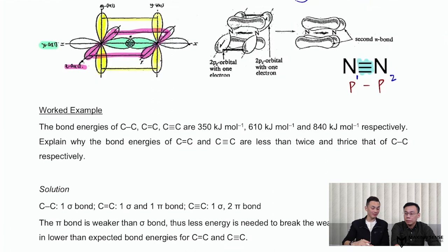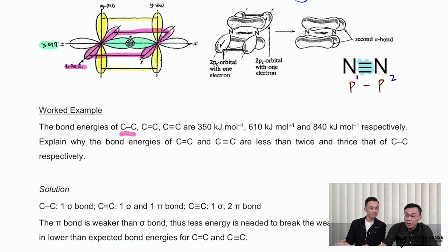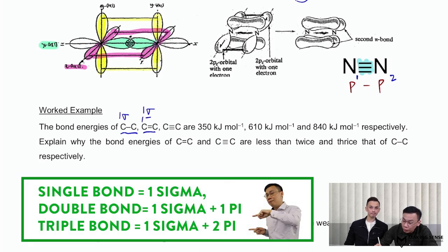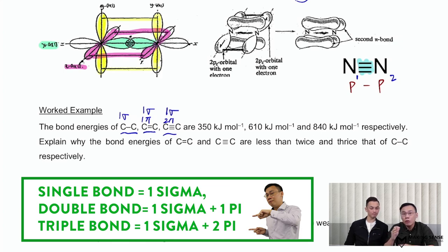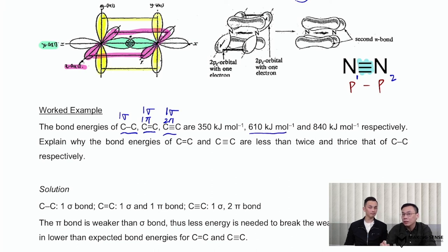There's an example below. The work example gives you the bond energy of a carbon-carbon single bond, a carbon-carbon double bond, and a carbon-carbon triple bond. For a single bond there's only one sigma bond. For a double bond, the first bond formed is sigma, the second is pi. For a triple bond, the first bond formed is sigma, the remaining two bonds are pi bonds. We all know that a pi bond is weaker than a sigma bond because the extent of overlap is less effective. So if you notice the values of bond energy, the bond energy of the double bond is not twice that of a single bond — it's less than two times. And the bond energy of the triple bond is not three times that of a single bond — it's less than three times — simply because a pi bond is weaker than a sigma bond.